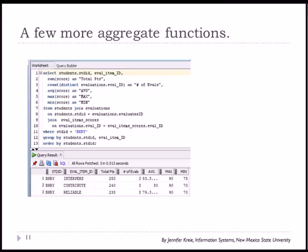So let's look at a couple more aggregate functions. I've added to the previous example a sum and I'm looking at total points. We see the 240, which sums up the three scores received by evaluators for BKRY.